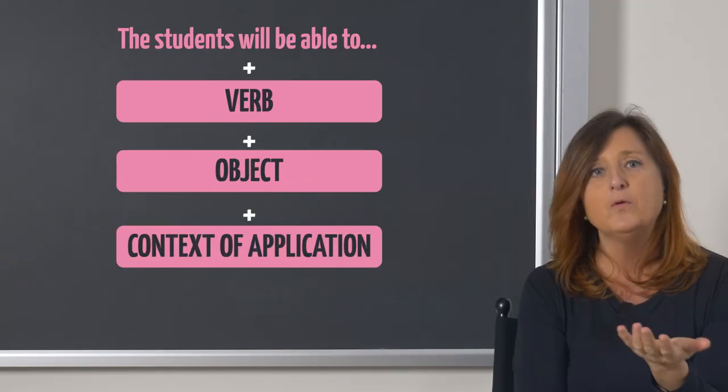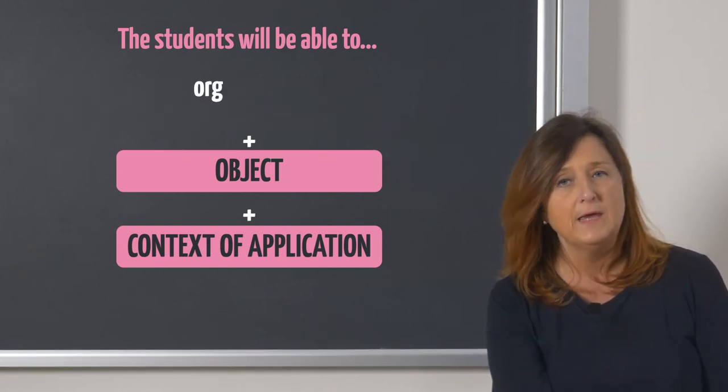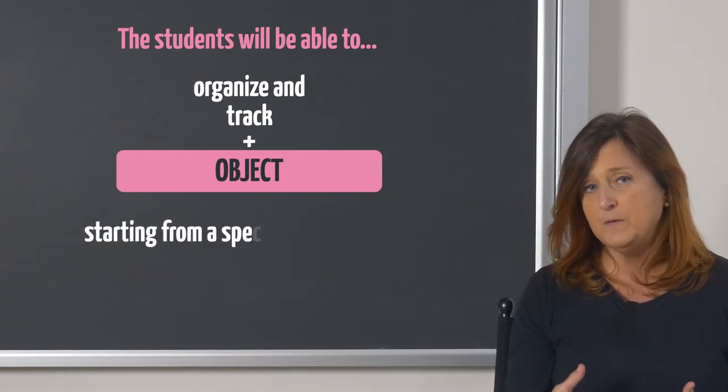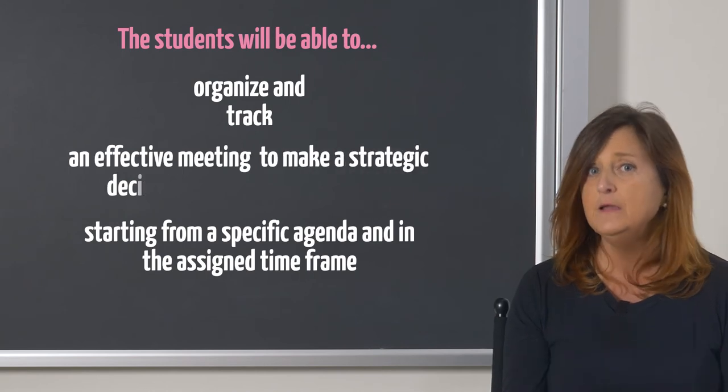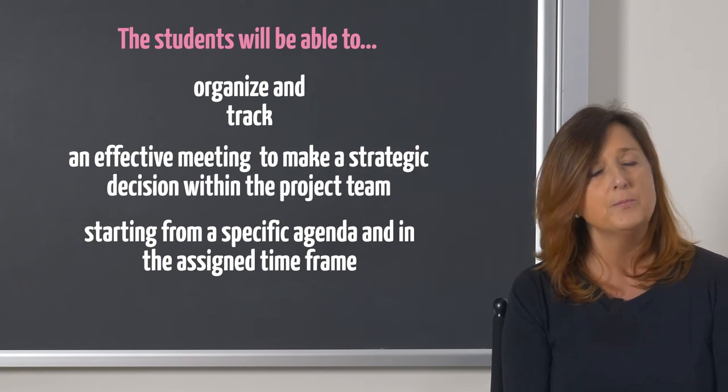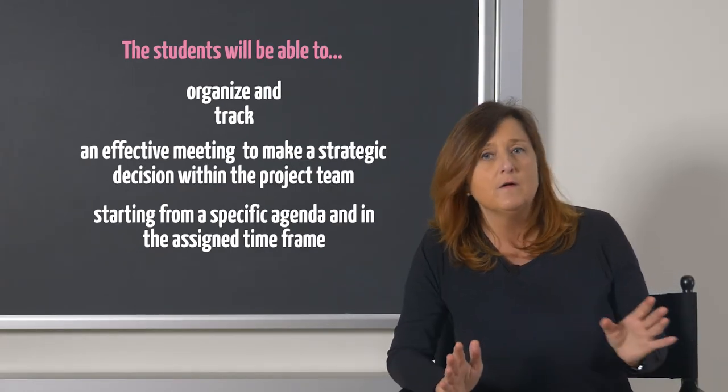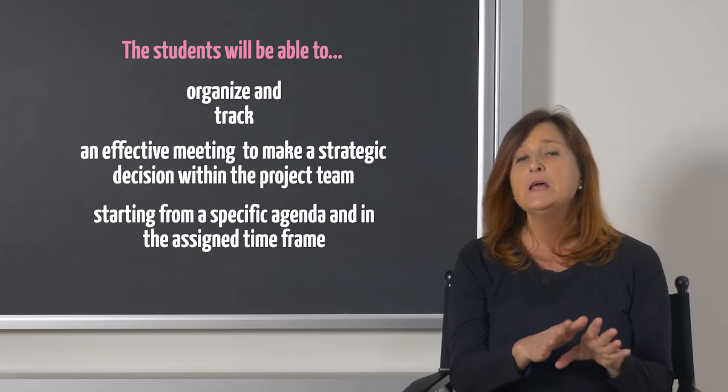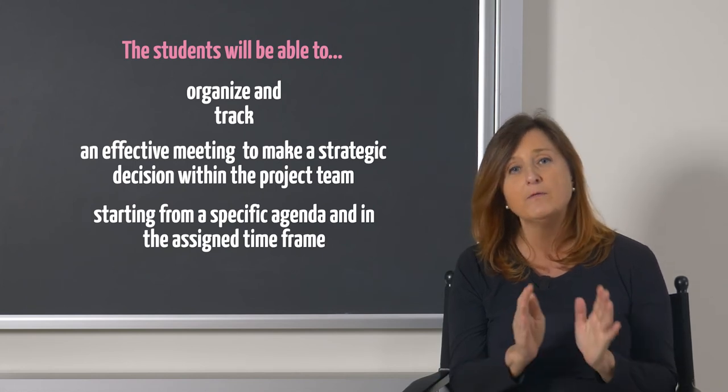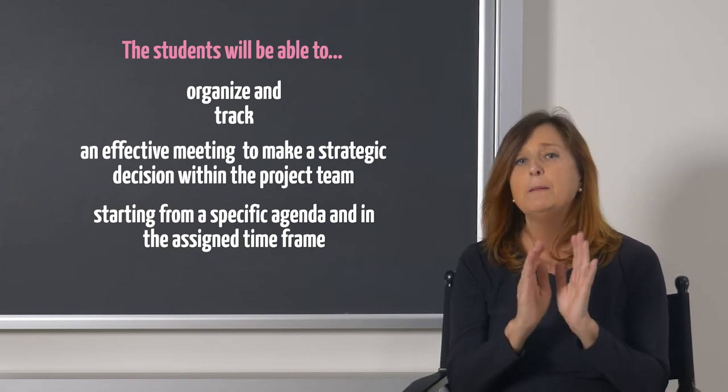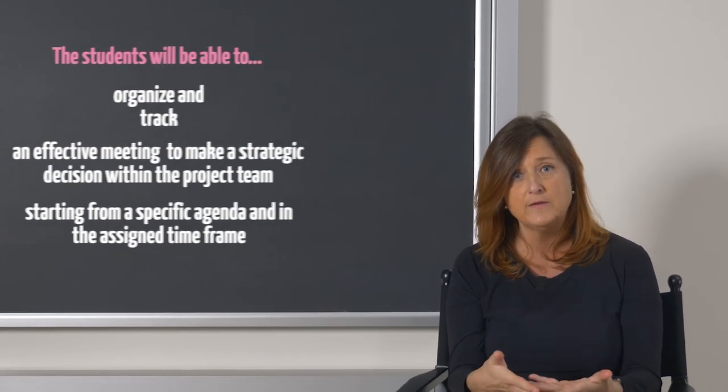Let's try with an example related to soft skills. The student will be able to organize and track, starting from a specific agenda and in the assigned timeframe, an effective meeting to make a strategic decision within the project team. You might have noticed already that when we talk about soft skills related to intended learning outcomes, the focus is on a particular kind of performance that doesn't belong to a result as a product or an objective change, but belongs to the process and the relationship among the subjects involved.